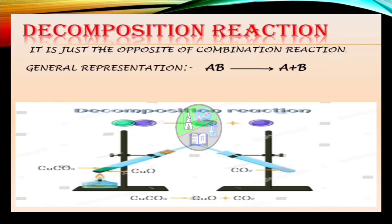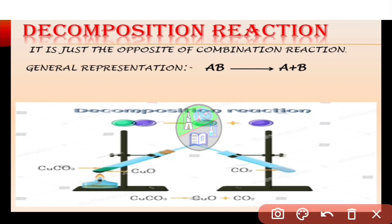The second type of reaction is decomposition reaction. A chemical reaction in which a compound splits or breaks into two or more simpler substances is called a decomposition reaction. It is just the opposite of combination reaction, and its general representation is AB → A + B. For example, copper carbonate on heating produces copper oxide and liberates carbon dioxide gas.